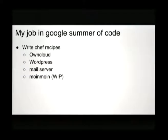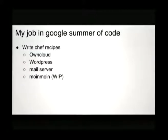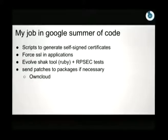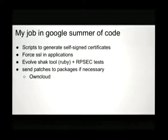My job in Summer of Code was to write Chef recipes — for ownCloud, WordPress, mail server, and moimoying (work in progress) — and scripts to generate self-signed certificates for SSL on applications, evolve Shaq with Ruby plus RSpec tests, and send patches to packages if necessary.